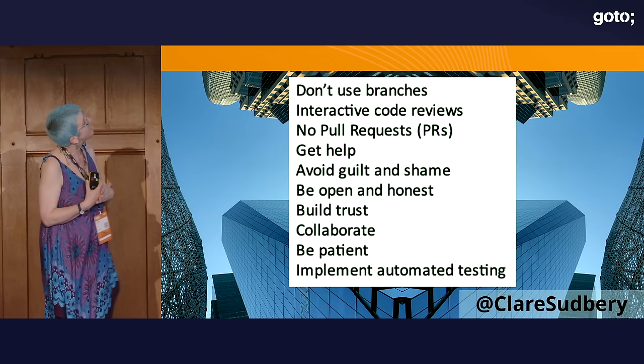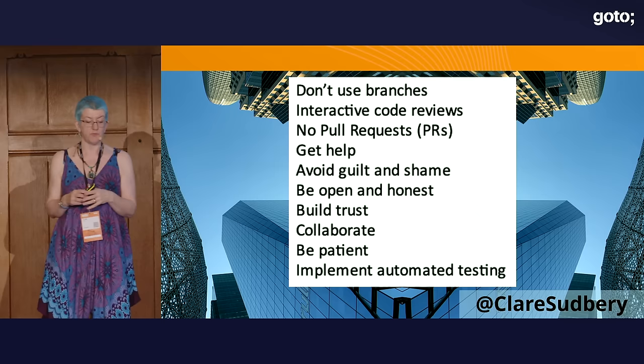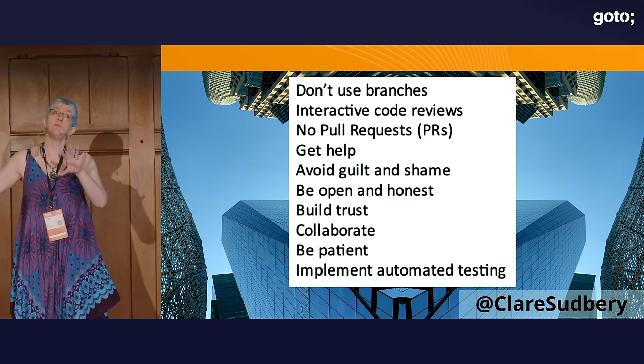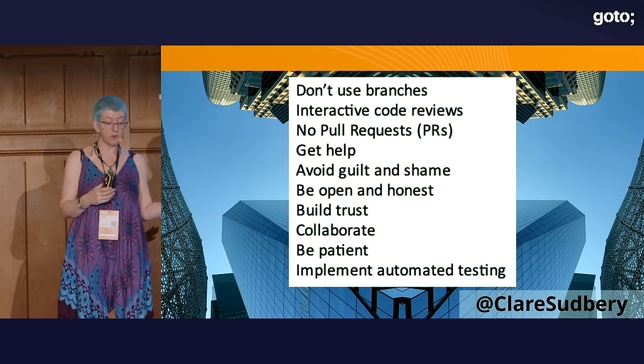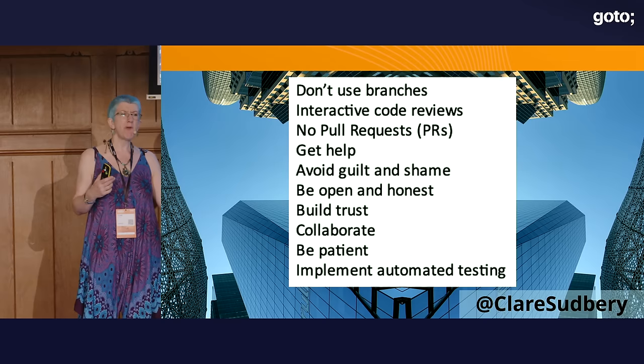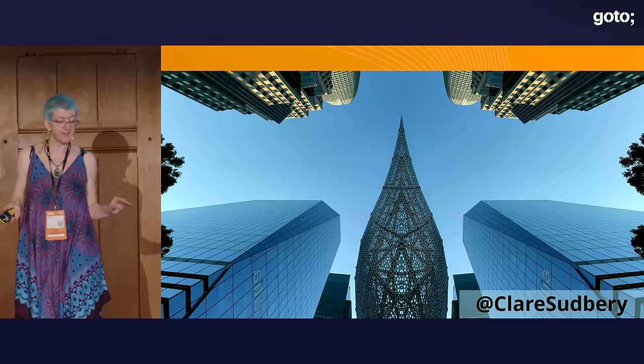Summary of techniques I've talked about: don't use branches. Have interactive code reviews where you're reviewing code constantly because there's more than one pair of eyes. When you do review code, do it holistically as a team. Avoid pull requests. Get help. Avoid guilt and shame — be open and honest about what you're doing and why. Avoiding blame really helps. People are allowed to make mistakes and ask for help.